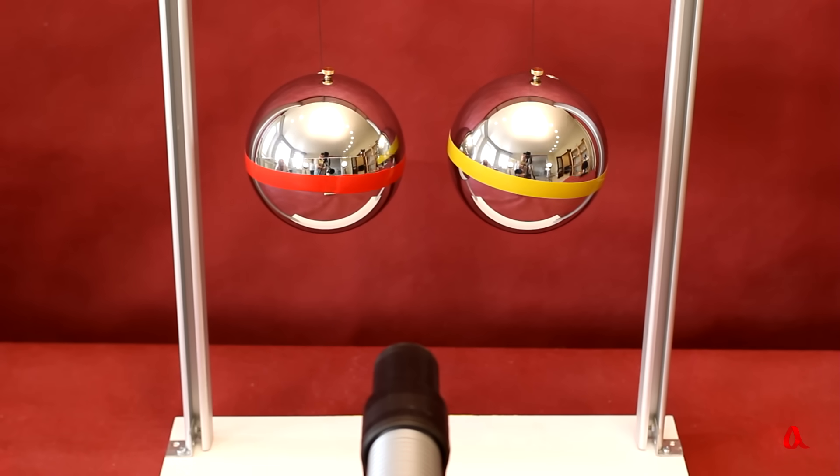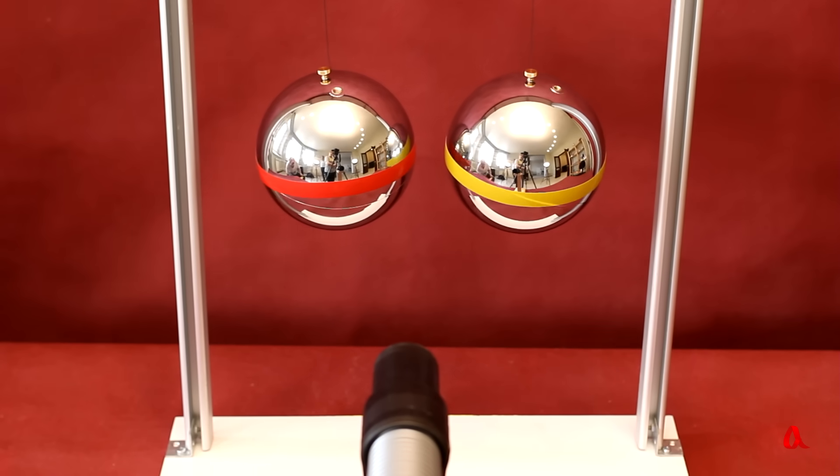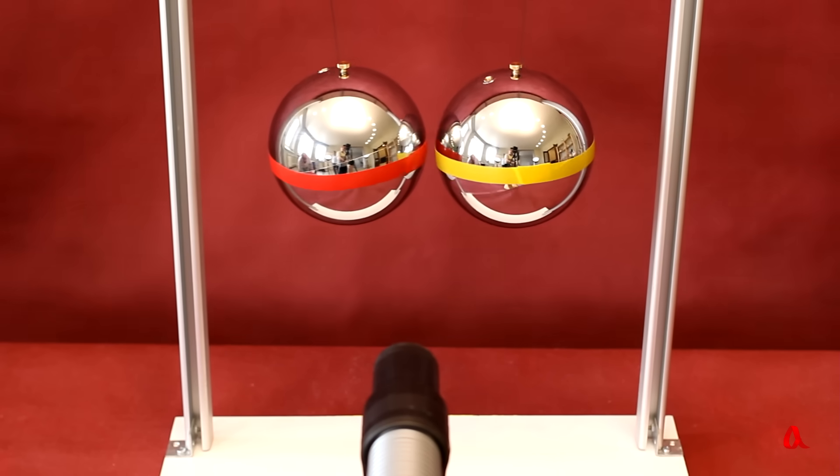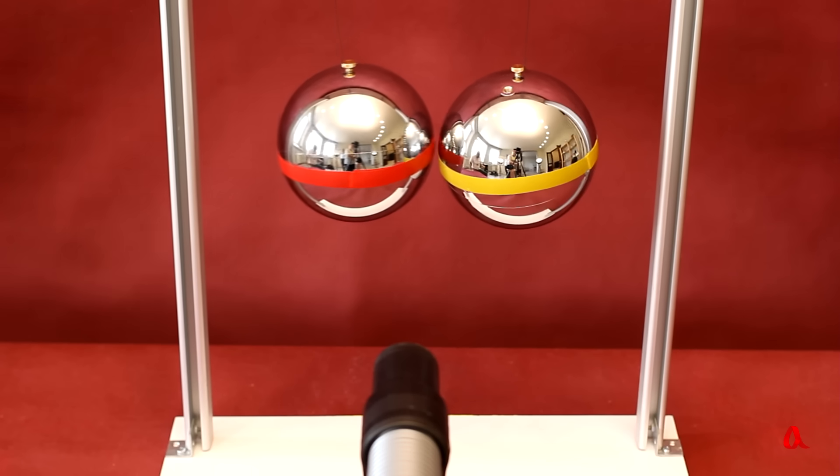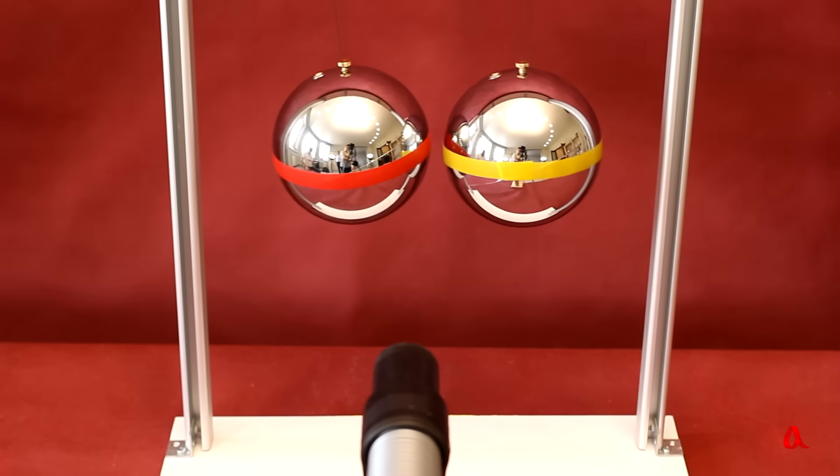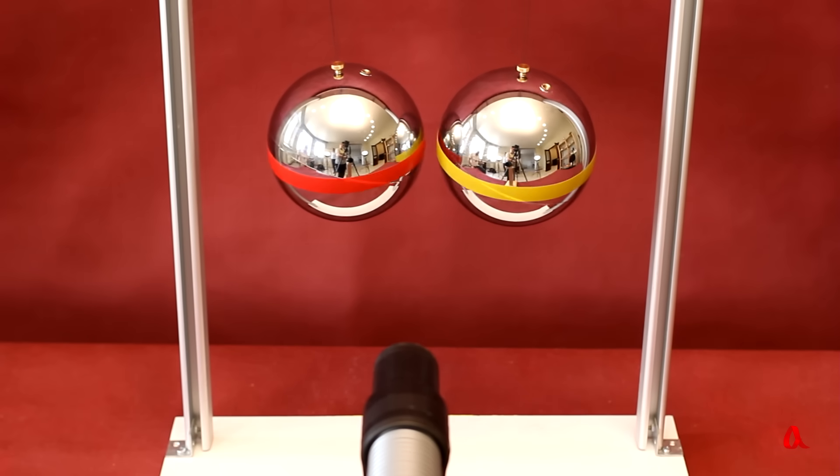We switch on the blower and, surprisingly, the balls get attracted by one another. They are rotating, which means the airflow is getting through between them. Why isn't it pushing them apart?